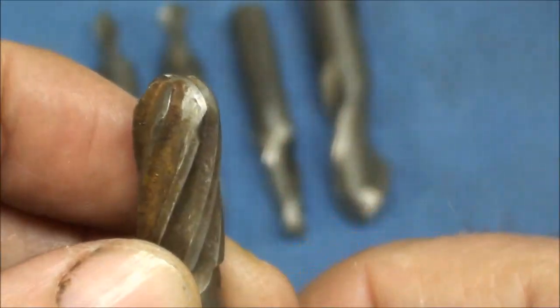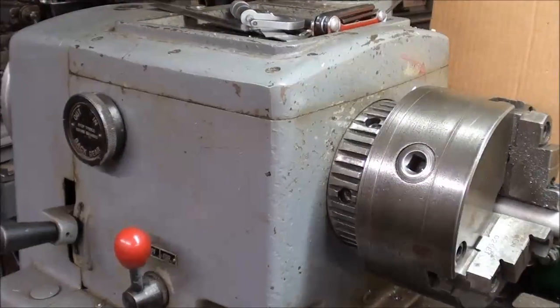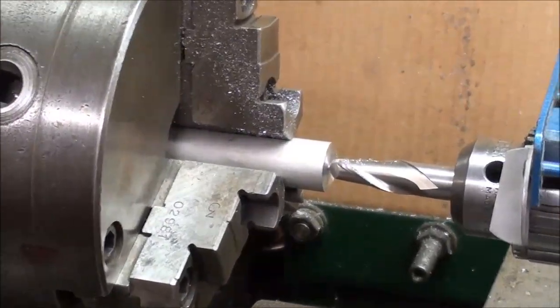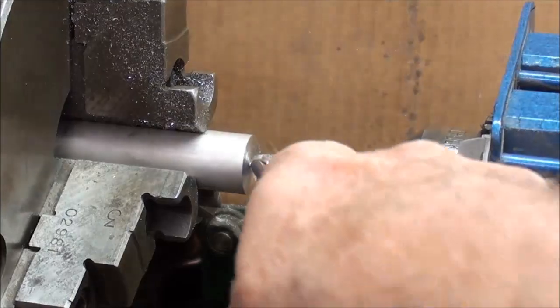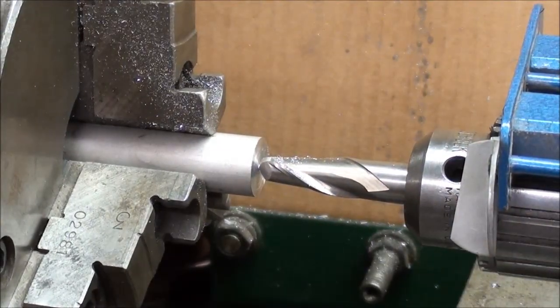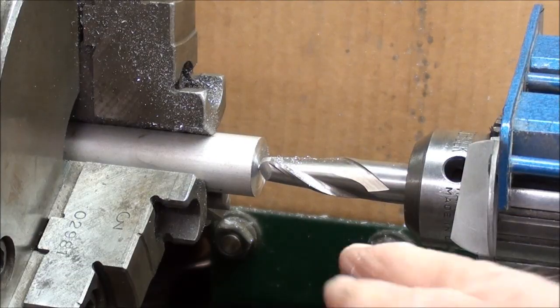This is the Clausing lathe and I have three-quarter inch aluminum in the three jaw chuck and that's a half inch ball end mill.